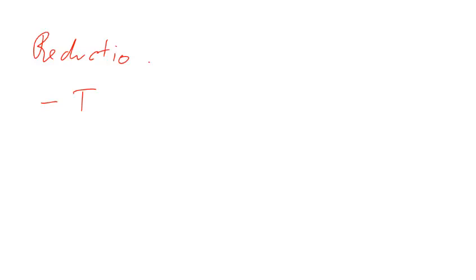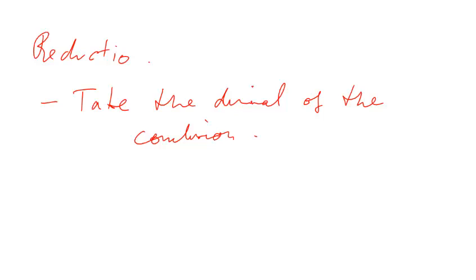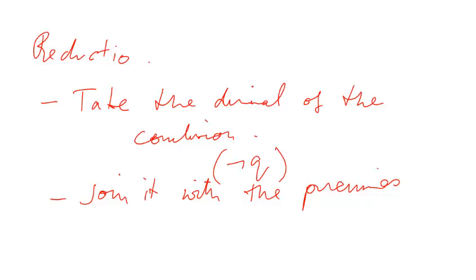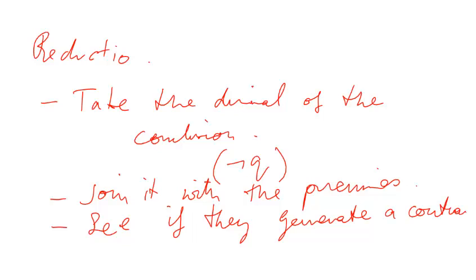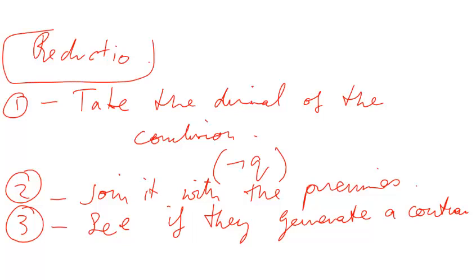How does the reductio method work? First, we take the denial of the conclusion. In this case it would be not Q. Then we join it with the premises and see if they generate a contradiction. So these are our three steps. These are reductio arguments — we've talked about those. They're indirect methods of proof.